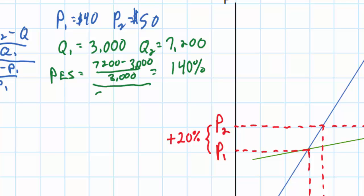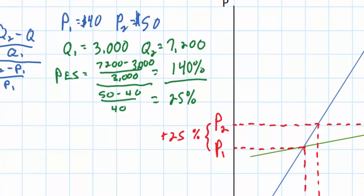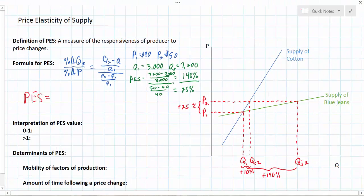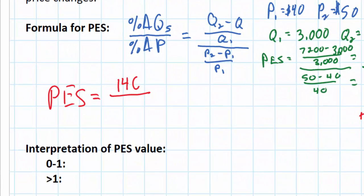We take P2 — $50 — subtract P1 — $40 — and divide by P1 — $40. That gives us an increase in the price of 25%. Now we can calculate the PES for blue jeans between $40 and $50. In response to a 25% increase in price, the quantity supplied of blue jeans increased by 140%. So the PES coefficient is 140 divided by 25, which gives us a PES of 5.6.